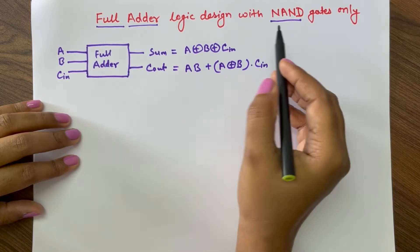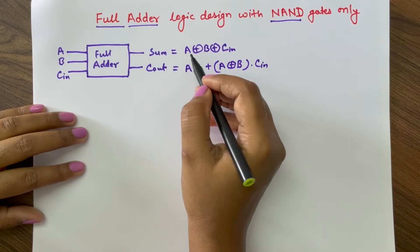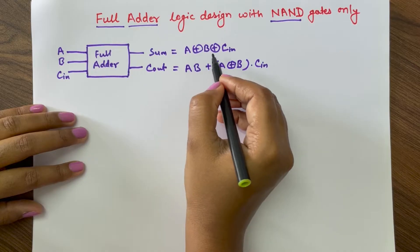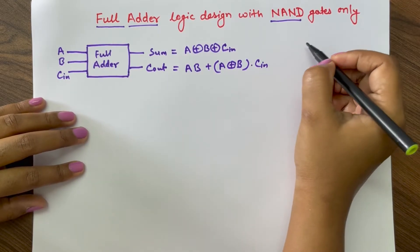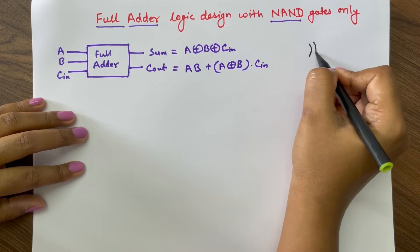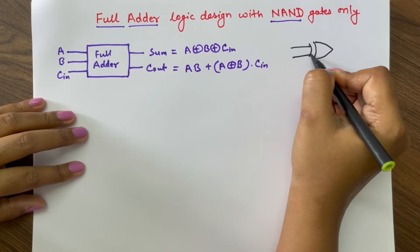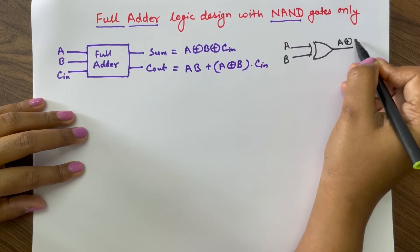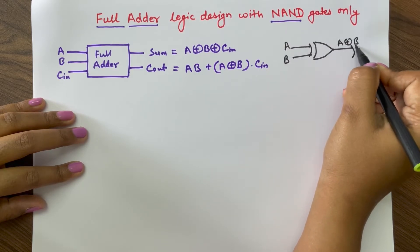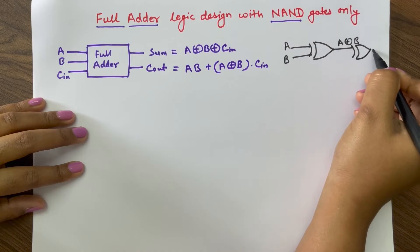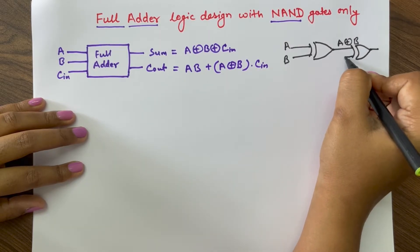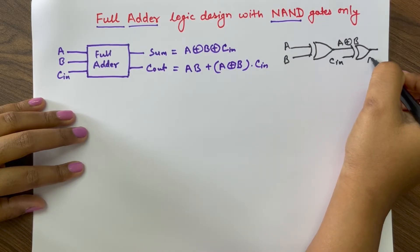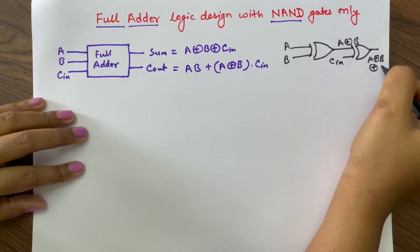Now let us realize this full adder with NAND gates. We can see that sum is A XOR B XOR C_in, so we need two XOR gates. We connect the first XOR gate with inputs A and B, and the output A XOR B connects to the second XOR gate with input C_in, giving output A XOR B XOR C_in.